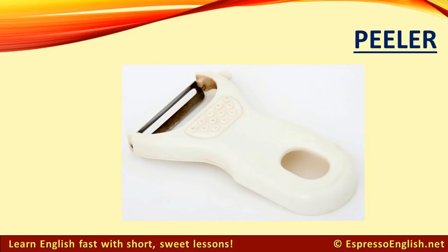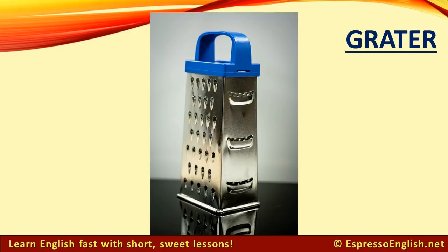Peeler. Use a peeler to peel — remove the skin from fruits and vegetables. Grater. Use a grater to grate or shred food into small pieces.